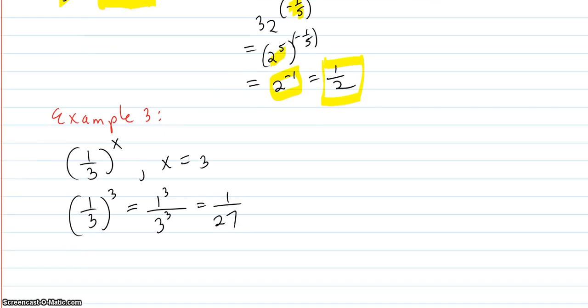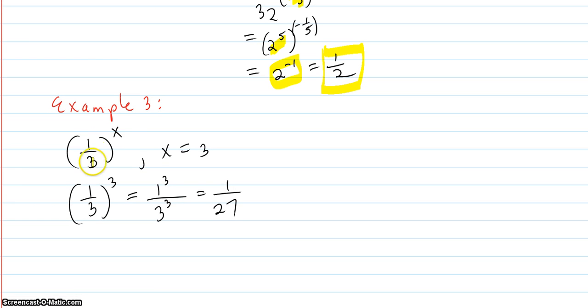You can verify these on the calculator. Example 3: 1 third to the x at x equals 3. So x equals 3. You can break this up: 1 to the third over 3 to the third equals 1 over 27.